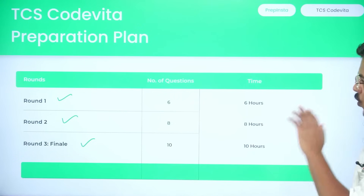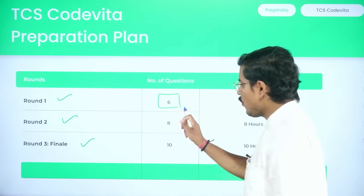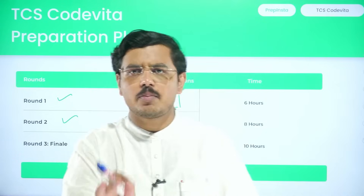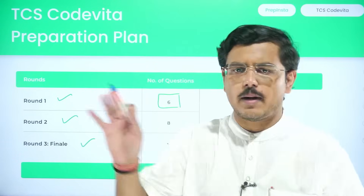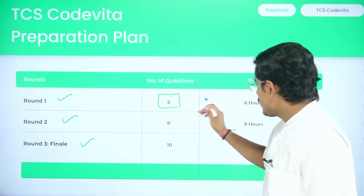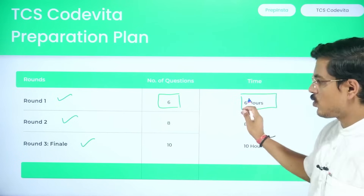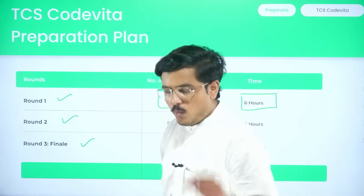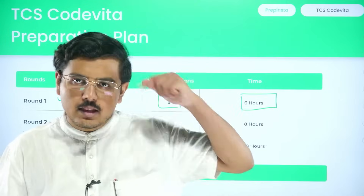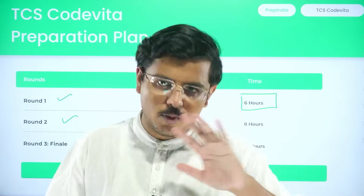In round one, you will generally have six questions. The pattern has been like this and 99% this time it will be the same — six questions, six hours to solve, so approximately one hour per question. You can imagine the level of difficulty is immense.